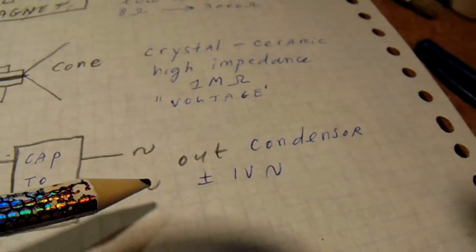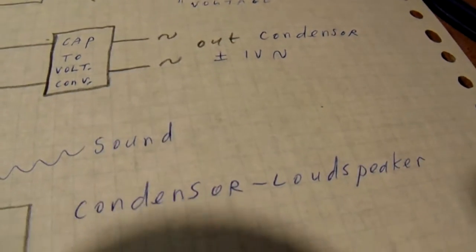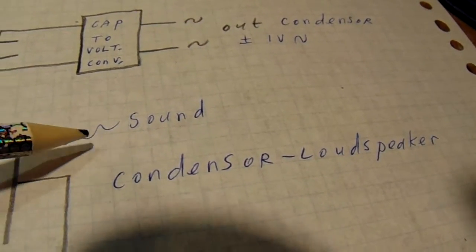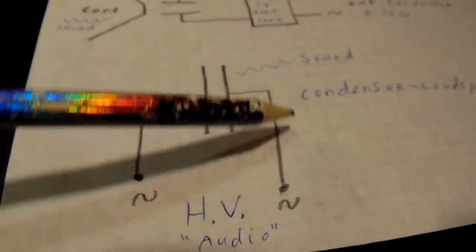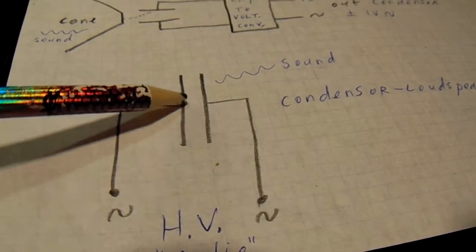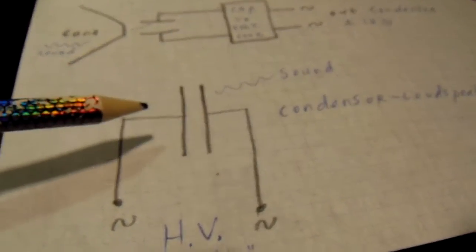Another principle is the so-called condenser microphone or the condenser loudspeaker. Such a condenser loudspeaker consists of two plates. A high voltage is added that makes the two plates from the loudspeaker move, and you can hear that as a sound.